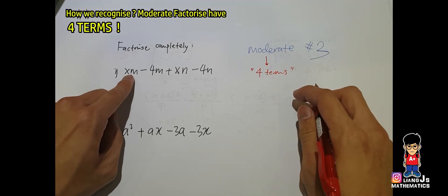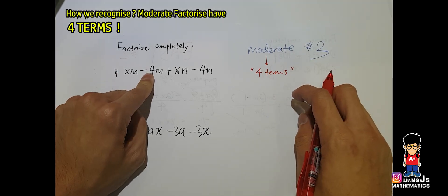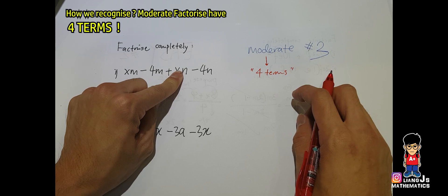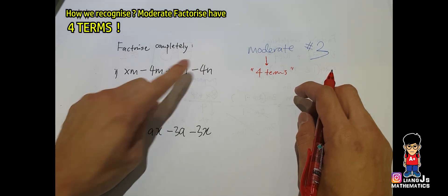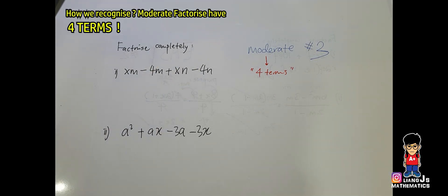See, one: xm, second one: minus 4m, third one: plus xn, and the fourth one: minus 4n. So the four terms over here, in order to factorize it easily, there are a few common mistakes that I see students did.